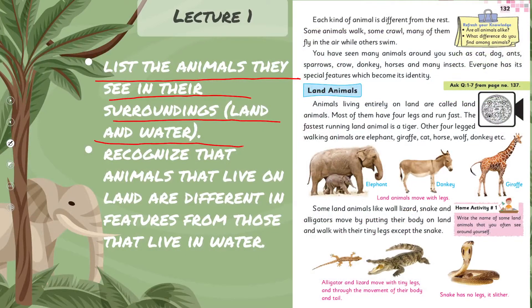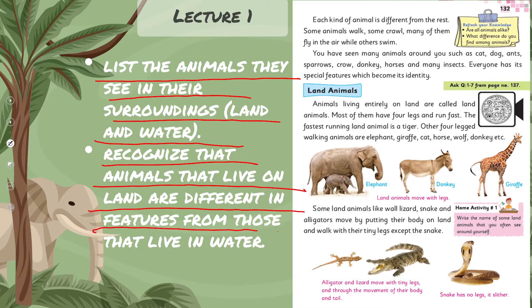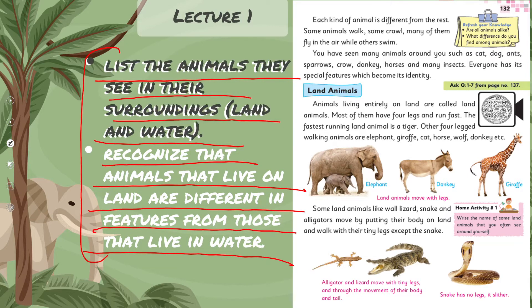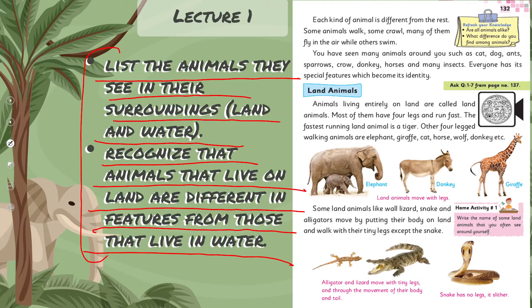In Lecture Number One, students will be able to list the animals they see in their surroundings like land and water, and they will also be able to recognize that animals that live on land are different in features from those that live in water.